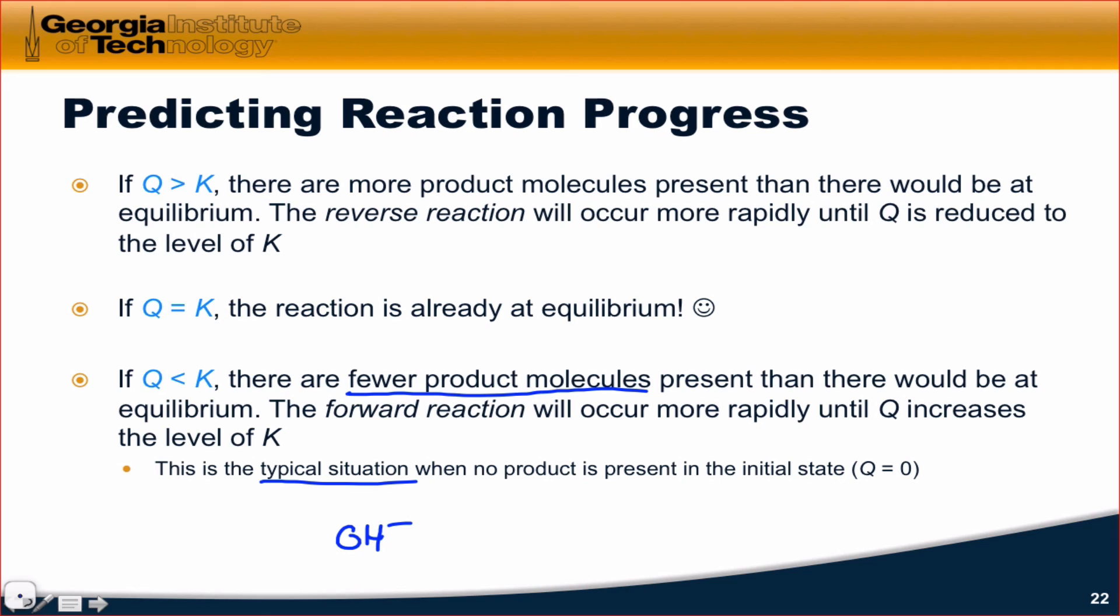You can't control the self-ionization of water. There's always going to be OH- in there, and that can influence where you are in relation to the equilibrium state of, for example, an acid-base reaction. But in any case, typically we start with zero products, and so typically, Q equals zero to start.